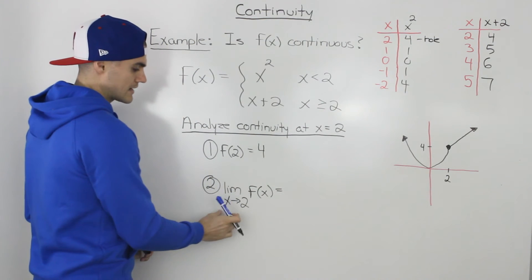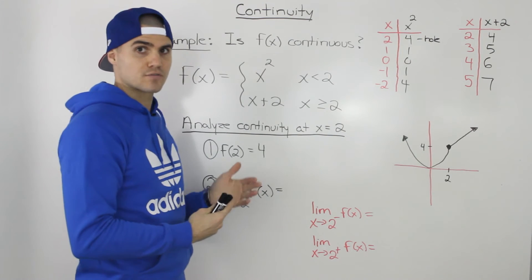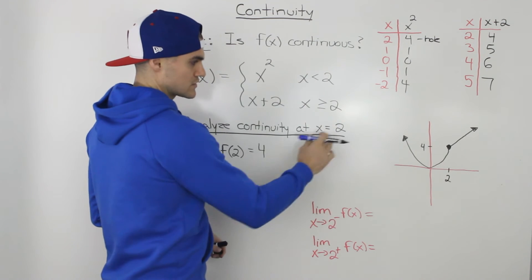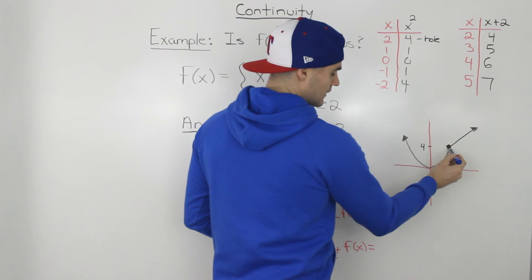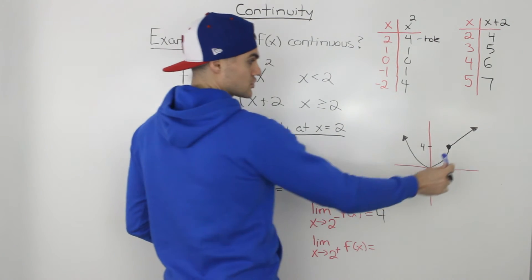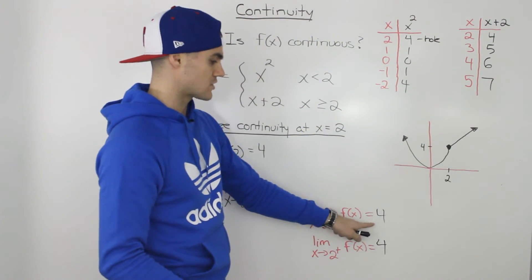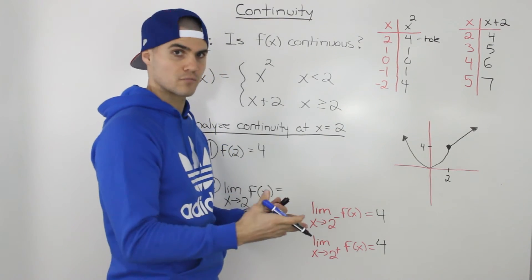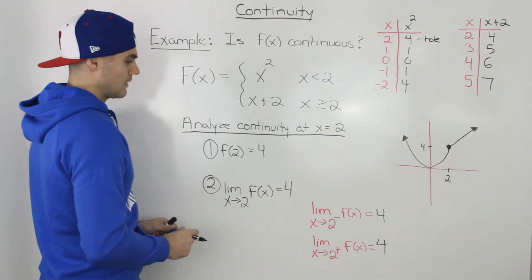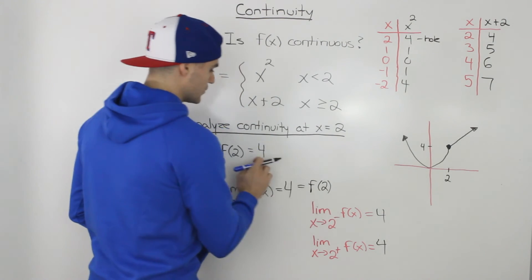Now for the second condition: the limit as x approaches 2 of f of x. To prove a limit exists, we find it from both sides. Approaching 2 from the left, the y value we're approaching is 4. Approaching from the right, the y value is also 4. Because both one-sided limits are equal, the limit as x approaches 2 of the function equals 4, which equals f of 2.